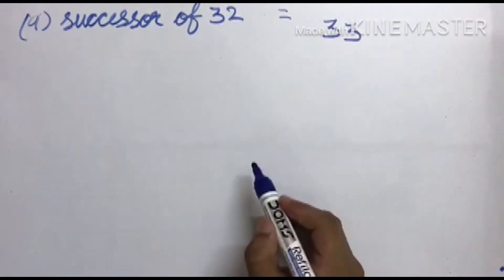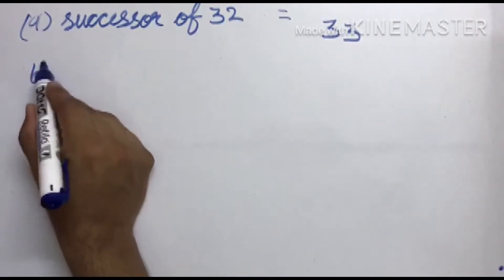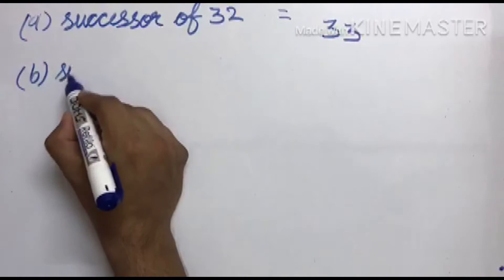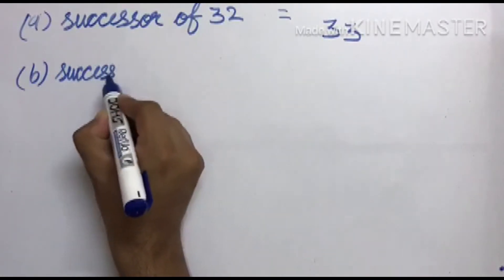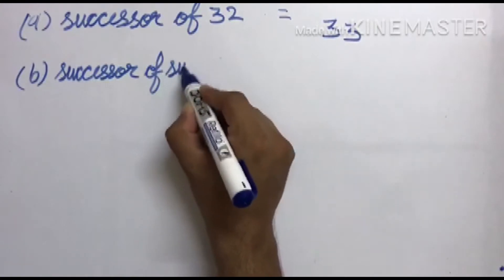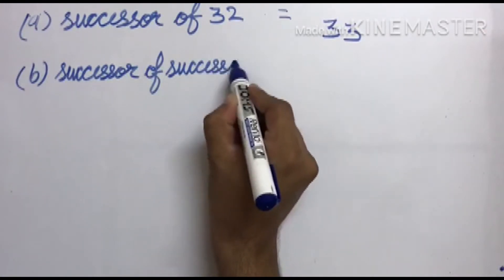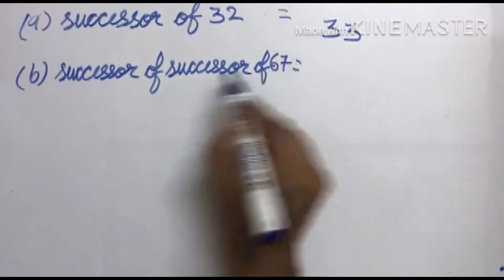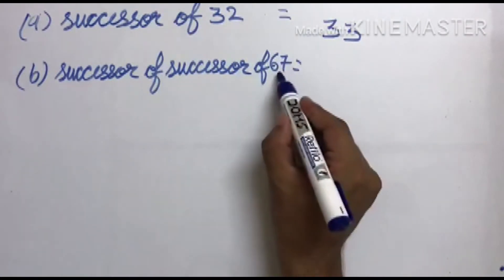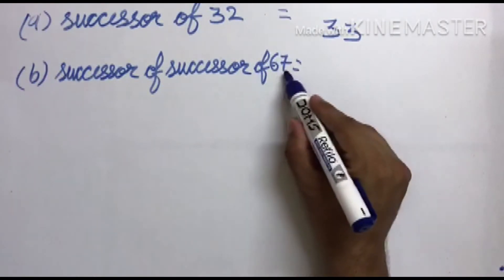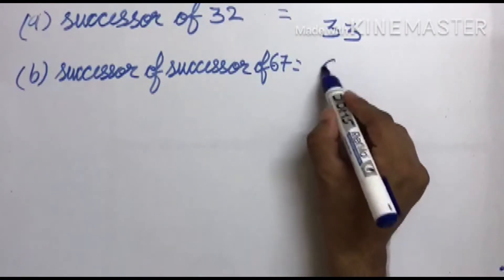The second number is the successor of the successor of sixty-seven. Sixty-seven का two times successor — 67 के two times आगे नंबर जाए तो 67, 68, and 69. So the answer is 69.